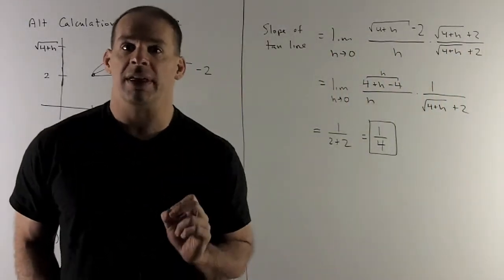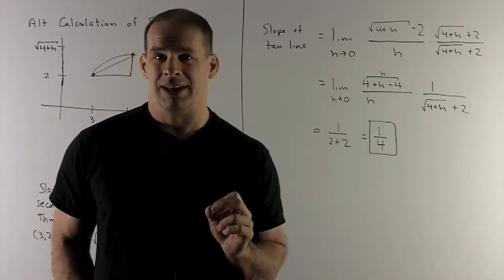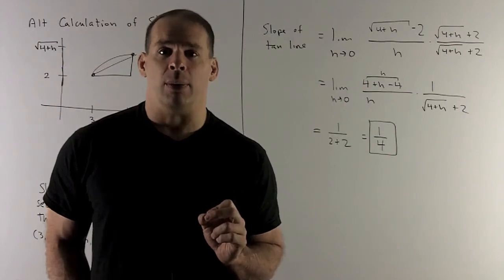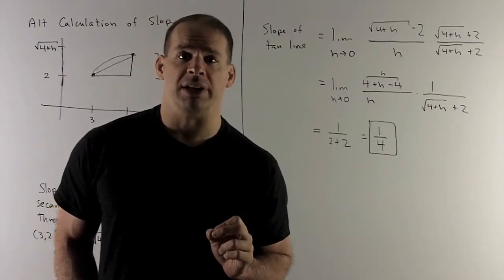We take the limit of this to get the slope of the tangent line. What happens? Well, we try putting our point 0 in, and we wind up with 0/0. So we have an indeterminate form, which means I need to do more work.